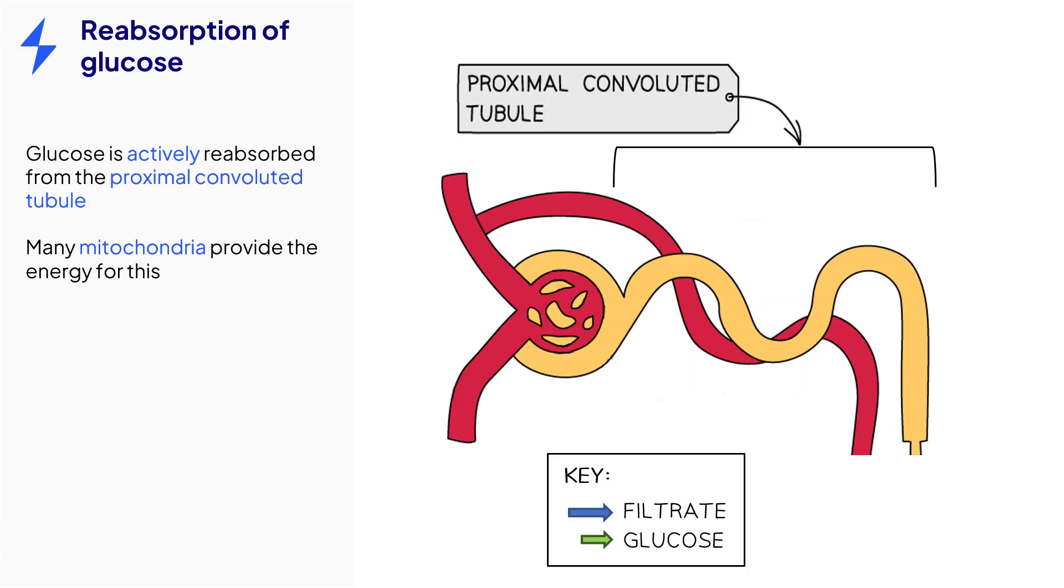After ultrafiltration, the useful substances must be reabsorbed back into the blood. Glucose is one such substance and will be reabsorbed by active transport as the filtrate passes through the proximal convoluted tubules.